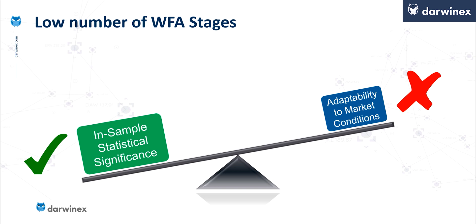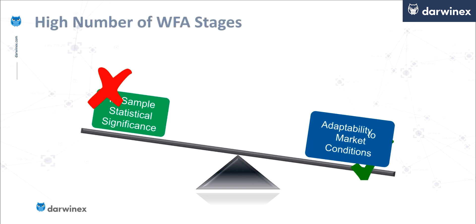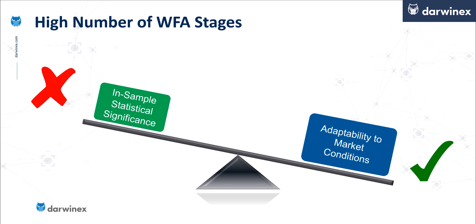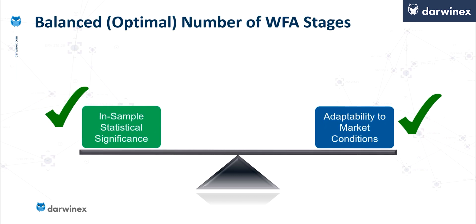But when we have a higher number of stages, the opposite applies. Here, the in-sample statistical significance is much lower, meaning the predictive power is lower. But the adaptability to market conditions is much better. And so one of the primary purposes of this research was to identify what the optimal balance is between the two.